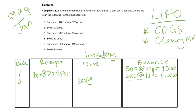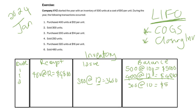Using LIFO, the last inventory purchased was the 400 units at $12, so we sell the 300 units at $12. That gives us 300 × 12 = $3,600. You always use the price from the last goods purchased — last in, first out. Our remaining balance is now 500 units at $10 and 100 units at $12, which is $1,200.